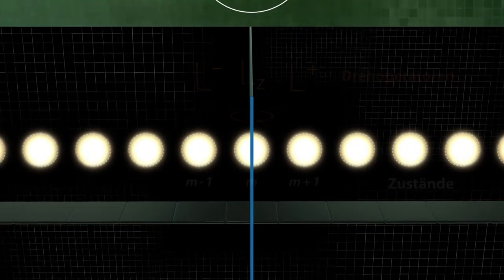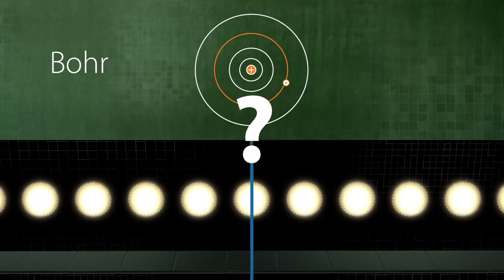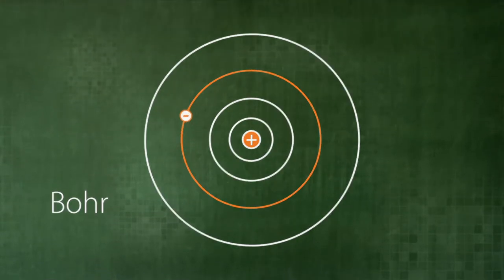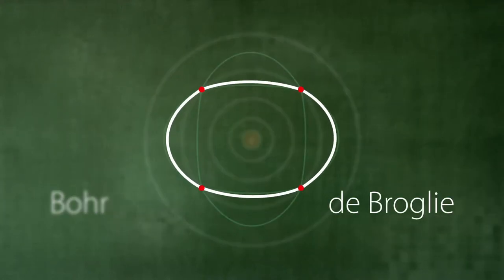How do these two models relate to each other? The Bohr atomic model was first refined by de Broglie, who assigned standing waves to electron orbits.